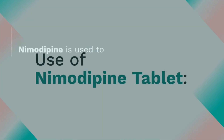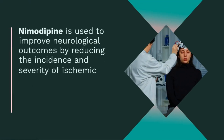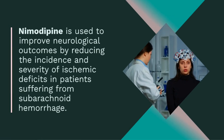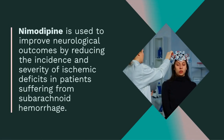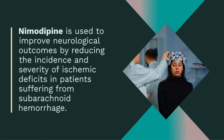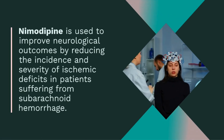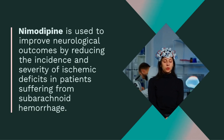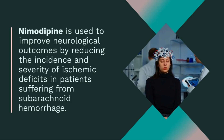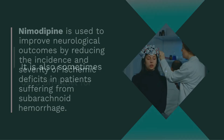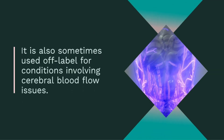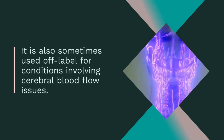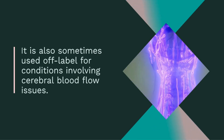Use of nematopine tablet. Nematopine is used to improve neurological outcomes by reducing the incidence and severity of ischemic deficits in patients suffering from subarachnoid hemorrhage. It is also sometimes used off-label for conditions involving cerebral blood flow issues.